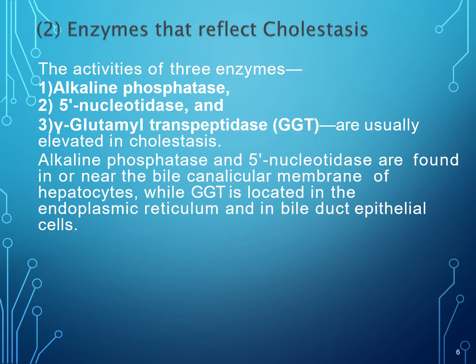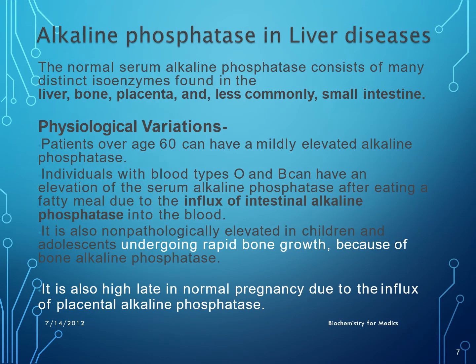Alkaline phosphatase and 5'-nucleotidase are found in or near the bile canalicular membrane of hepatocytes. The normal serum alkaline phosphatase consists of many distinct isoenzymes found in the liver, bone, placenta, and less commonly in the small intestine. Physiological variations include mildly elevated alkaline phosphatase in patients over age 60, and persons with blood group O and B can have high serum alkaline phosphatase after eating a fatty meal.